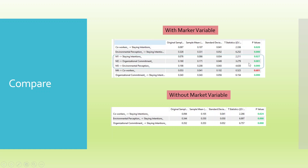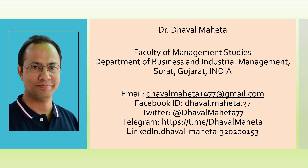Prima facie, the marker variables should have a p-value more than 0.05 to become insignificant. But in any case, if it is less than 0.05, you compare the path coefficients. If the results don't alter too much, you can say that common method bias is not present. This is how you can detect common method bias in PLS models, and the remedial measures — how to mitigate it. For more videos on SmartPLS, you can subscribe to my channel, follow me on LinkedIn and Twitter, and refer to my playlist. Thank you so much for watching.